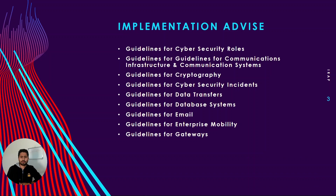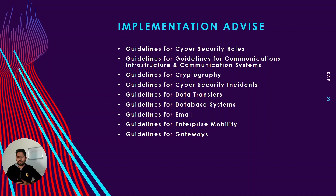Now that we know how the ISM CCM matrix looks, let's talk about implementation advice. The first category is guidelines for cyber security roles. ISM CCM talks about two roles: CISO and System Owners. CISO stands for Chief Information Security Officer. An organization must have a CISO, and the CISO should be aware of the overall cyber security posture of the organization.